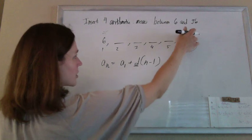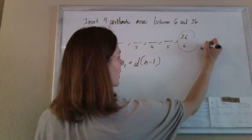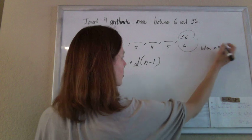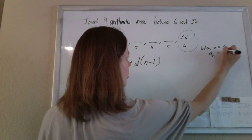So I know the sixth term is 36. In other words, when n equals 6, the nth term is 36.